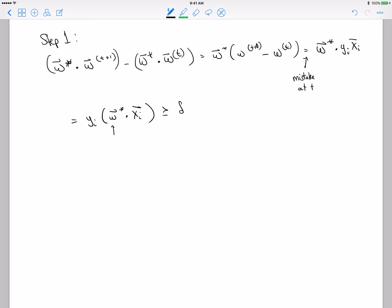After t mistakes, W star times W t plus 1 equals... I can always put in zero in disguise here. W1 is defined to be zero, the whole vector is zero.